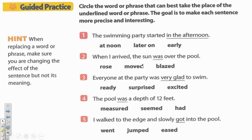Let's look down below at the guided practice and do that together. The directions say: circle the word or phrase that can best take the place of the underlined word or phrase. The goal is to make each sentence more precise and interesting. The hint says: when replacing a word or phrase, make sure you are changing the effect of the sentence, but not its meaning.